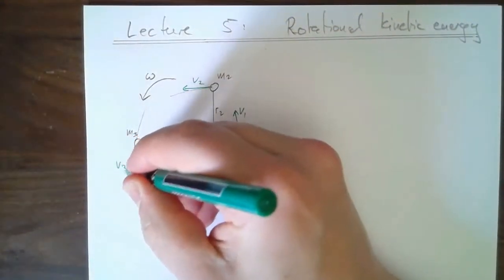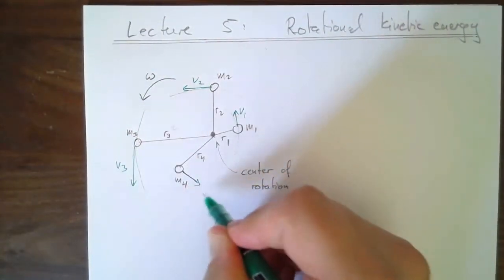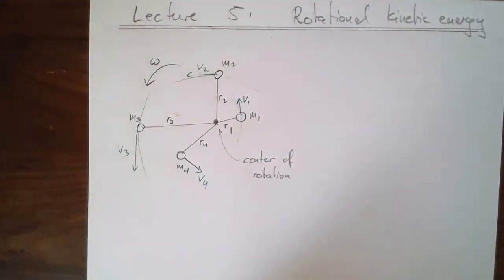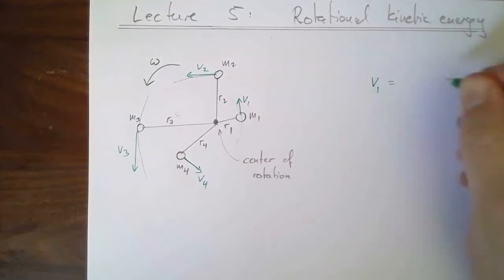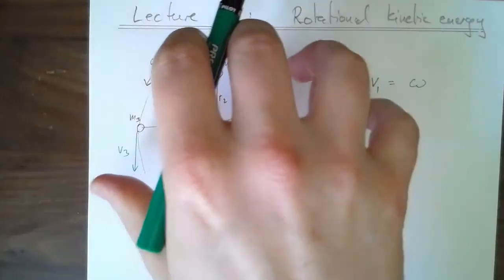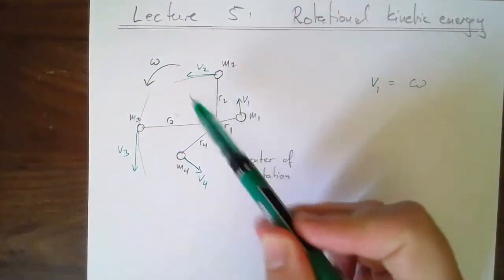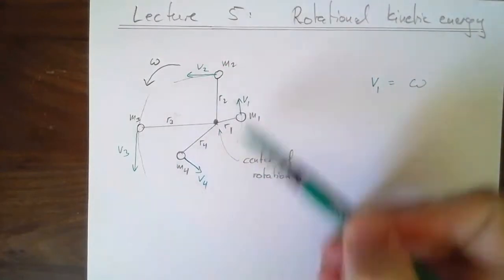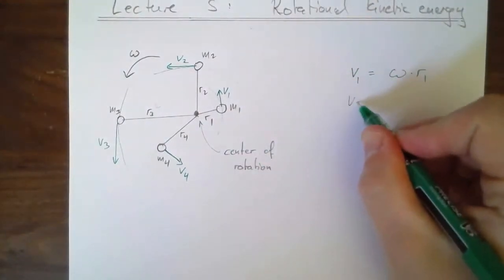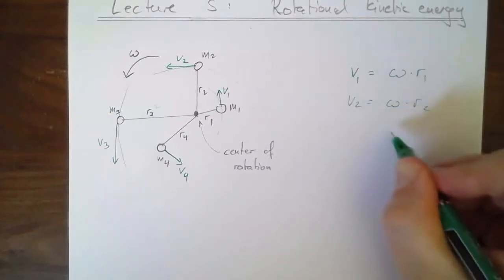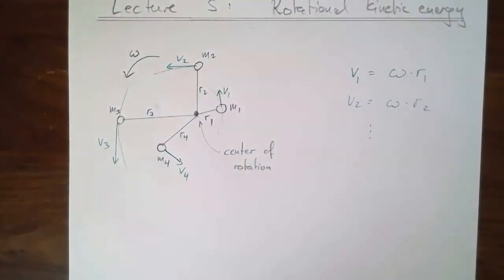I just chose four masses — could have chosen one, or a hundred, or a million. The velocity of each one, or rather the speed, is just omega — it's the same because it's a rigid body rotating as one piece. So v1 is omega times r1, v2 is omega times r2, and the same for v3 and v4.